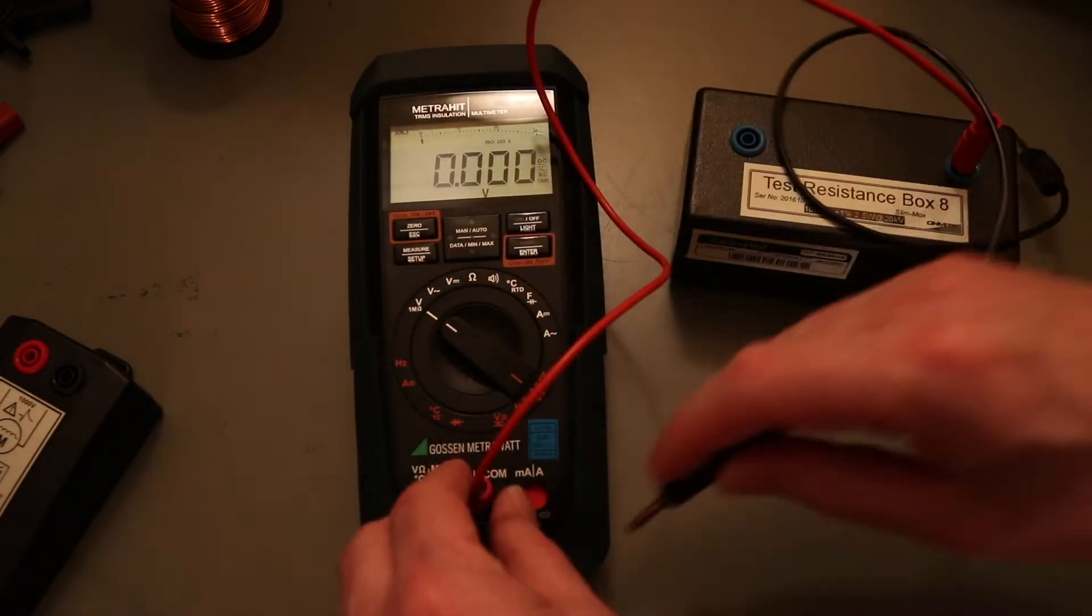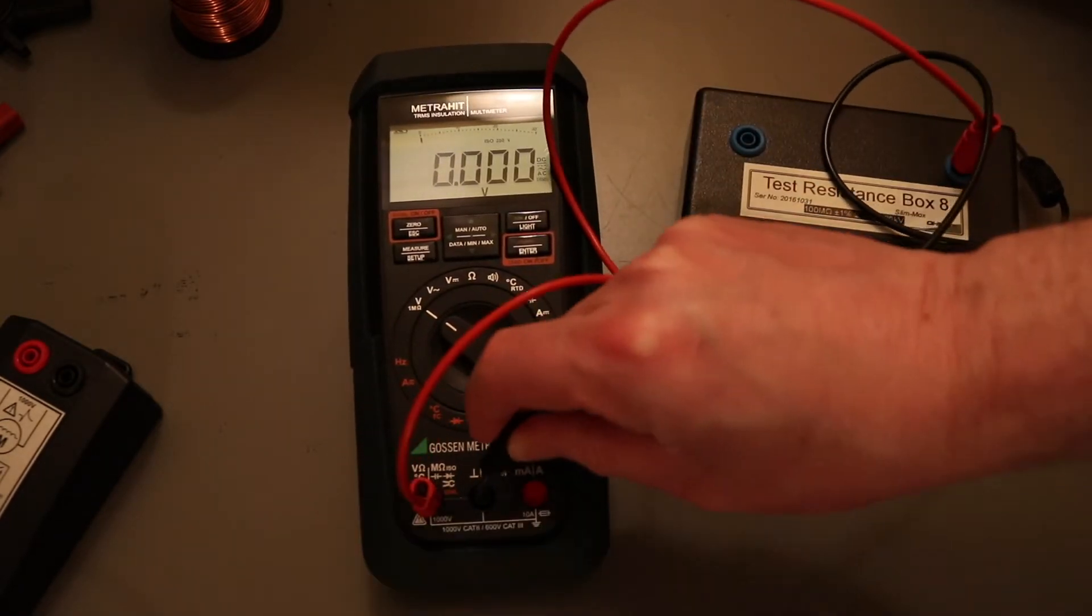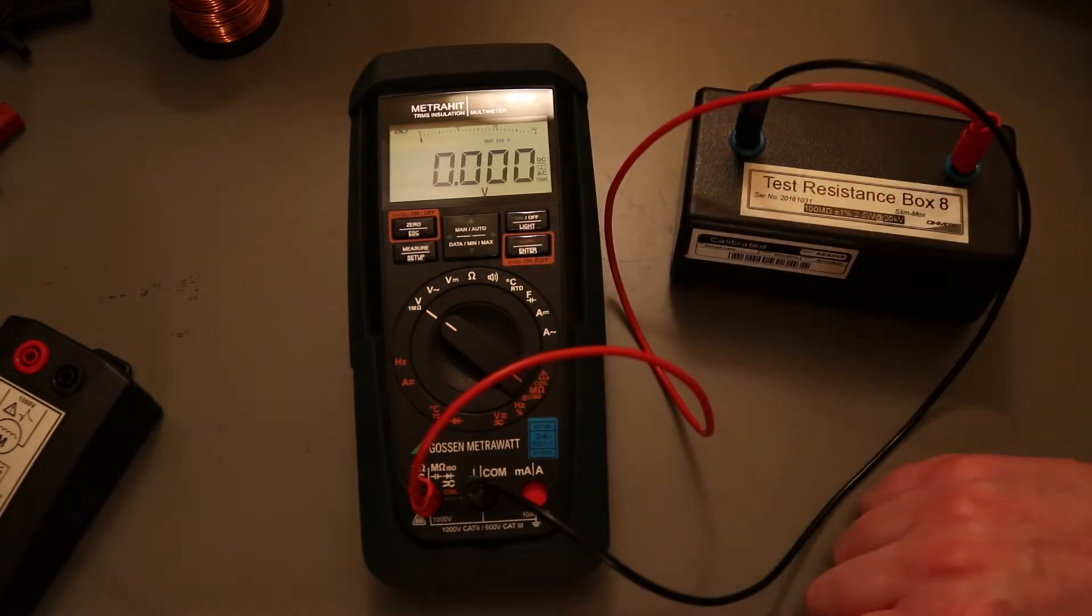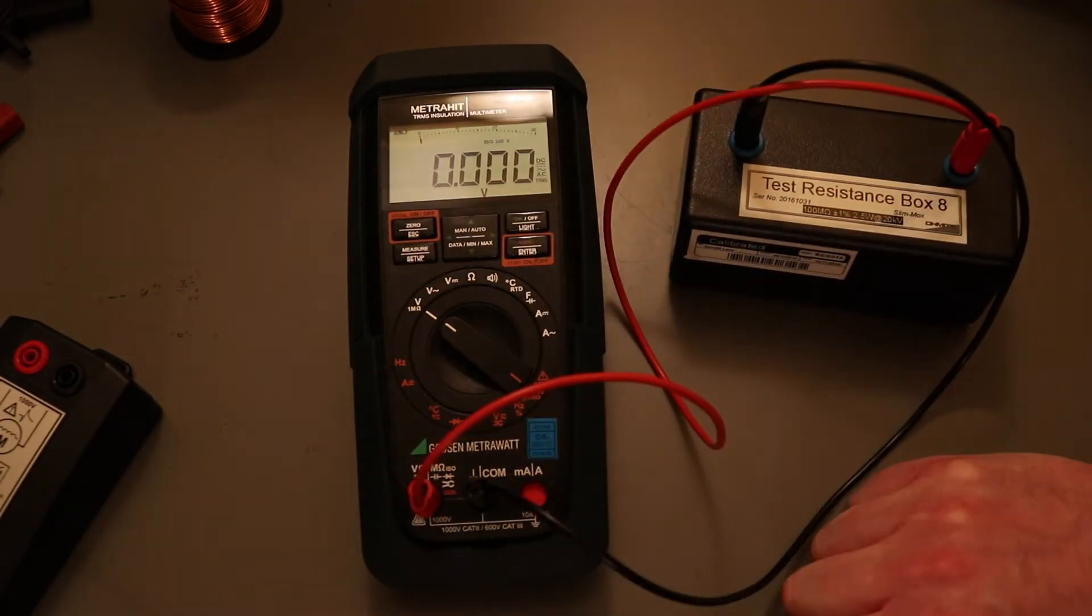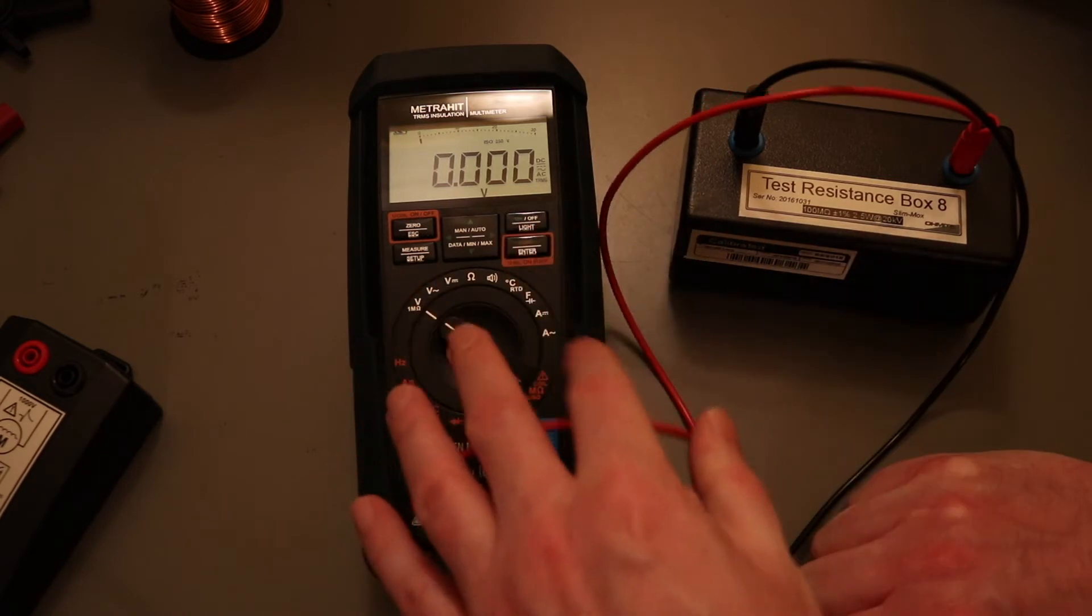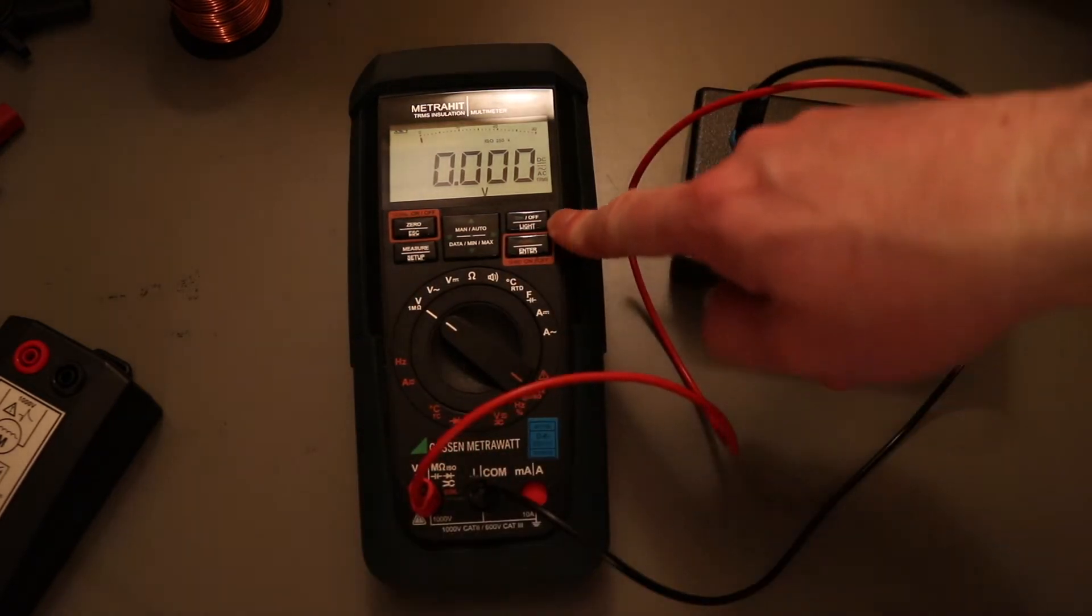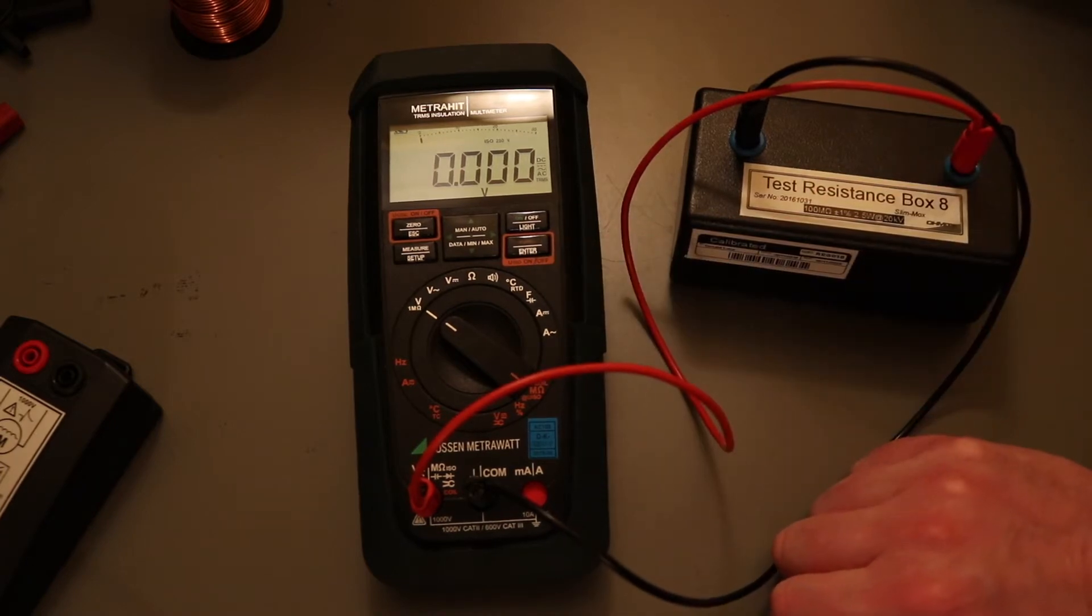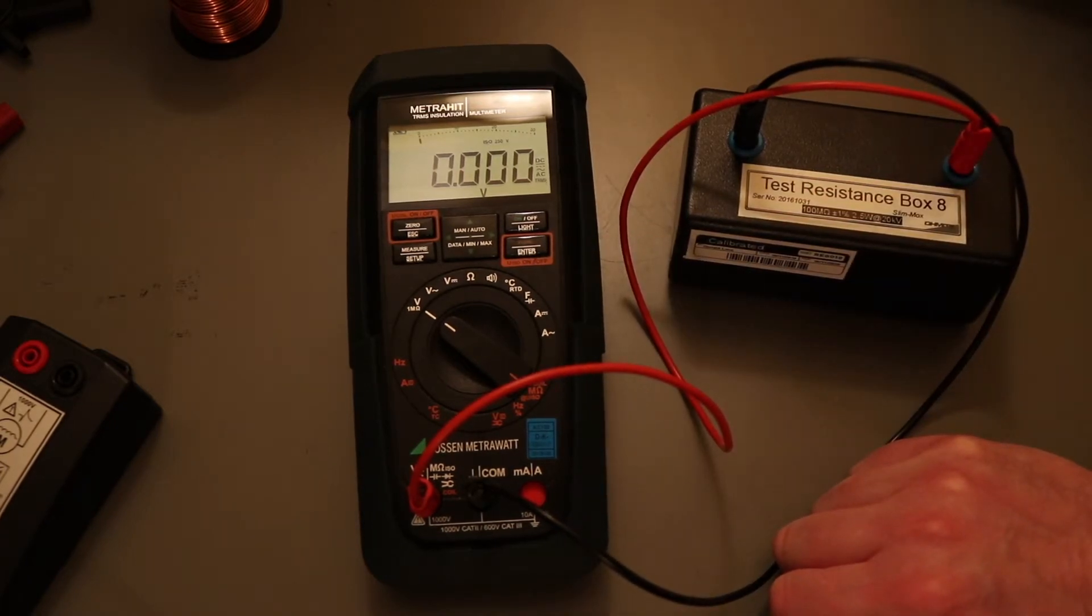Now the meter differs in that it doesn't actually have much of a lock-on function for doing an insulation test. It also doesn't have DAR or PI timed ratios built into the instrument either. If you wanted to do those you'd have to physically hold the insulation test button in for the duration of that test. So that to me is really missing.